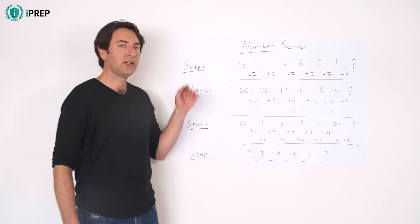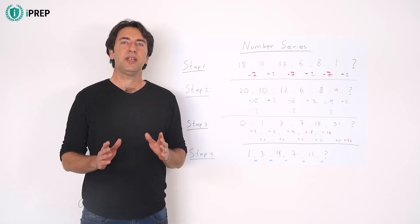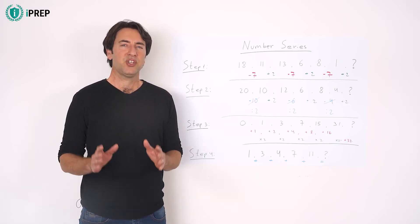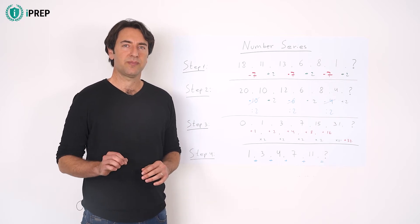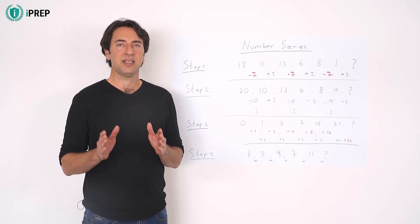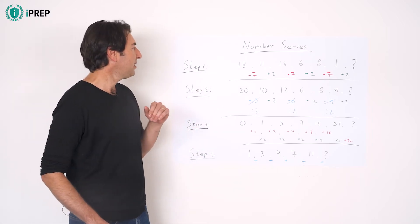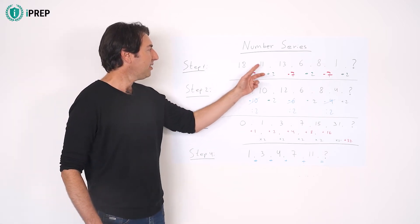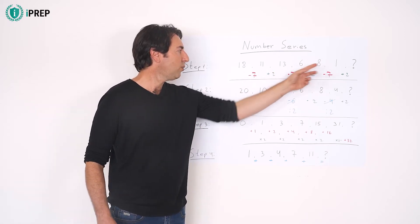Step 1. Write the differences between the numbers. This may shed light on consistent changes between the numbers. Start by writing the differences as basic addition or subtraction. For example, in this series: 18, 11, 13, 6, 8, 1.